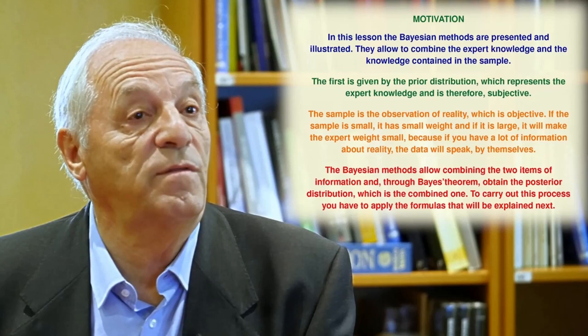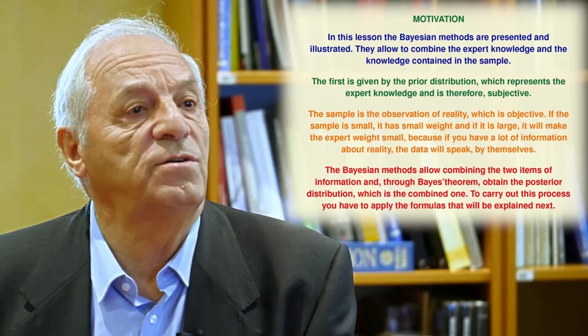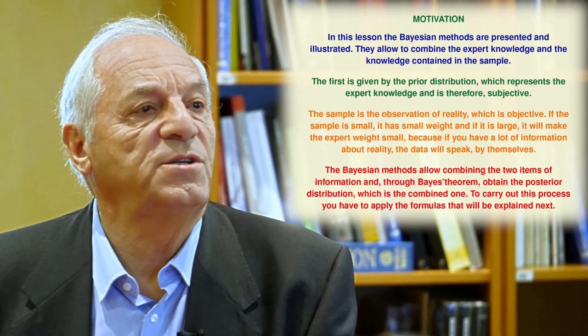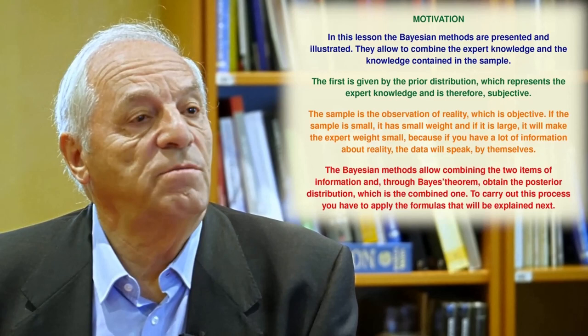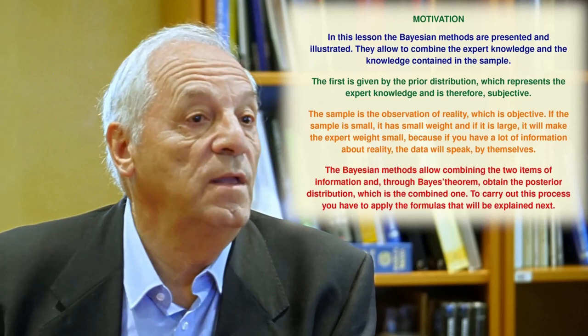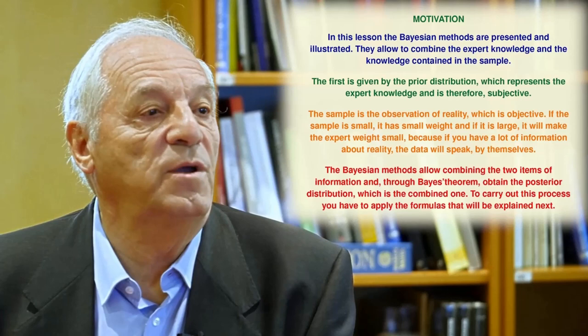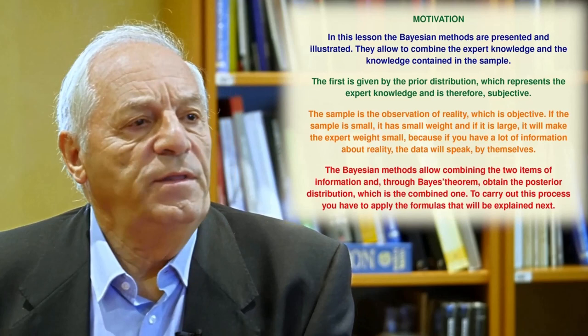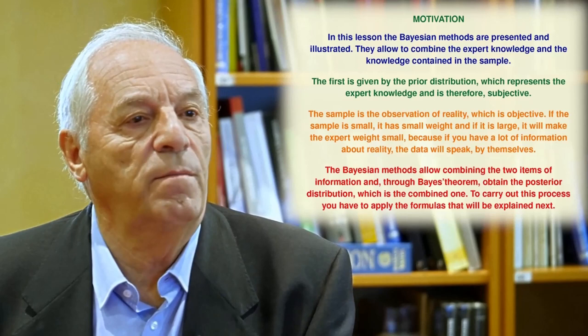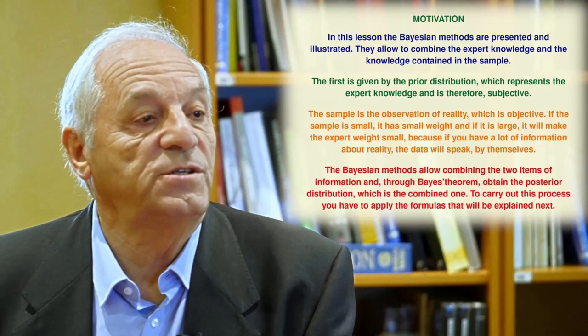The second lesson of the course is dedicated to Bayesian methods. These methods are presented and illustrated. They allow combining the expert knowledge and the knowledge contained in the sample. The first is given by the prior distribution, which represents the expert knowledge and is therefore subjective. The sample is the observation of reality, which is objective. If the sample is small, it has a small weight, and if it is large, it will make the expert weight small — because if you have a lot of information about reality, you do not need the expert opinion. The Bayesian methods allow combining the two items of information and through Bayes' theorem obtain the posterior distribution, which is the combined one.